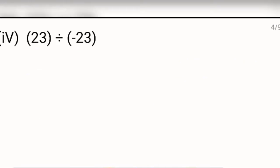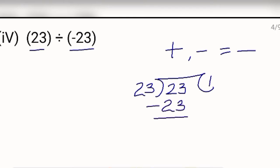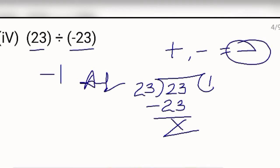Next question. Only one number has a negative sign — one is of plus sign and the other is of minus sign. So plus minus will be minus; the sign will be negative. Divide 23 by 23 — when you divide any number by the same number, you get 1. So you are getting 1 and the sign is negative, so the answer is minus 1.